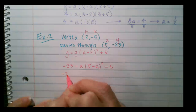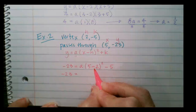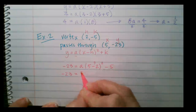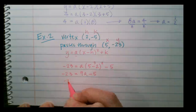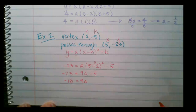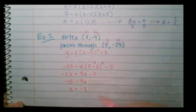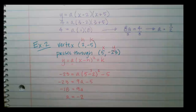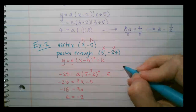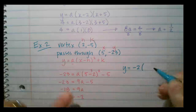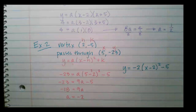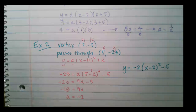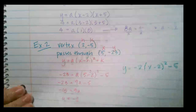Working through this: 5 minus 2 is 3, squared is 9, so I have negative 23 equals 9a minus 5. Adding 5 to both sides gives negative 18 equals 9a, so a equals negative 2. The equation of this parabola is y equals negative 2 times (x minus 2)² minus 5.